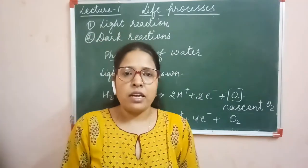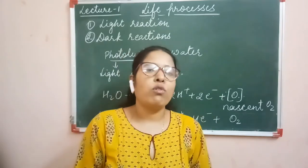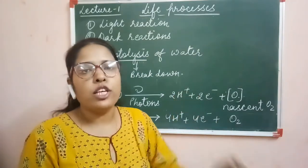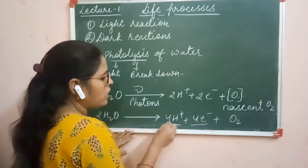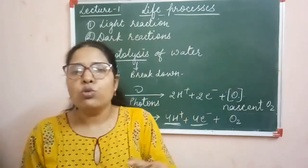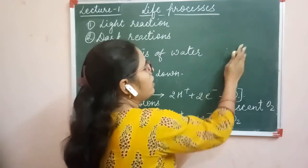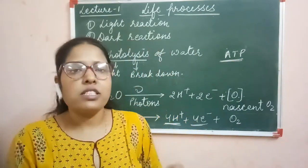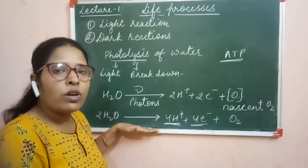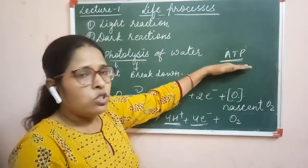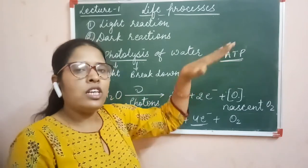Carbon dioxide gas mein bhi oxygen present hai, but it is not liberated during the process of photosynthesis. The oxygen that is liberated comes from the light reaction, and it comes from the water molecule. The protons and electrons released here are highly energy-rich particles, and these particles are used for the synthesis of ATP — adenosine triphosphate — which is the energy currency of the cell. Until light reaction takes place, dark reaction cannot occur, because the ATP generated in light reaction is used in dark reaction.